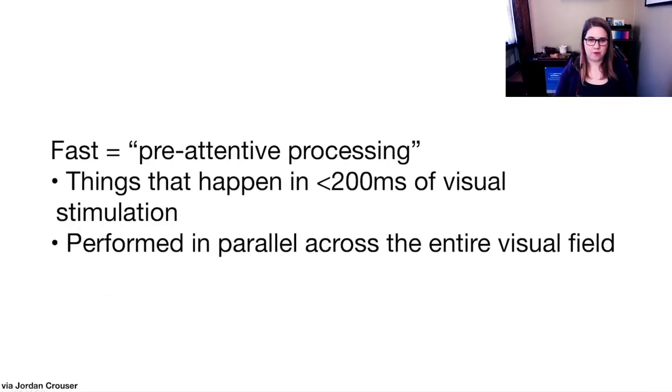When I talk about fast processing, I'm talking about pre-attentive processing. Your brain is doing this automatically without you having to give it any conscious thought. These are things that happen in less than 200 milliseconds of visual stimulation, and they get performed in parallel across the entire visual field. Our brains are doing this parallel computing process where we're able to perceive things in the whole, but we're also able to see the parts.